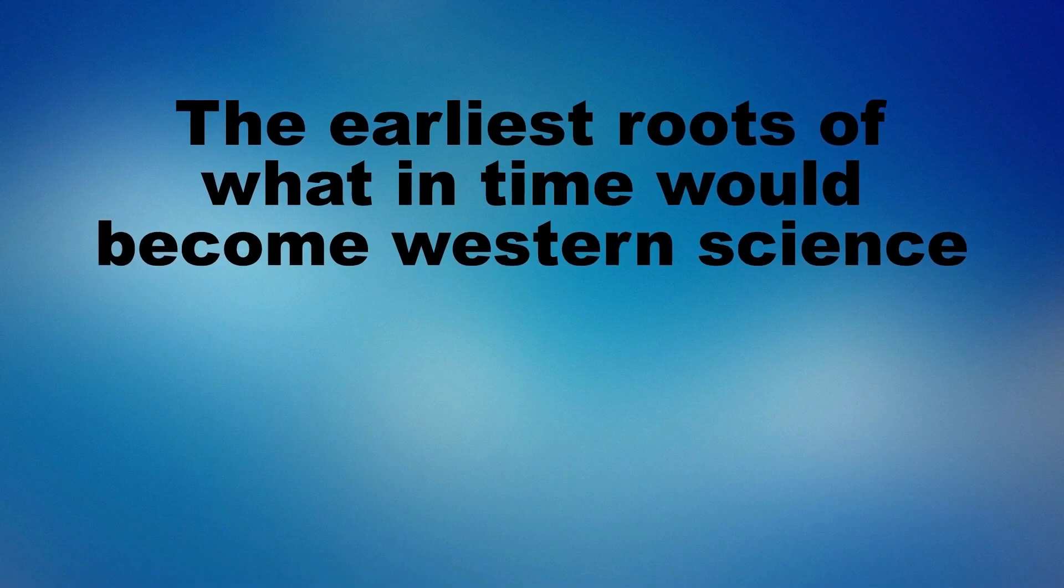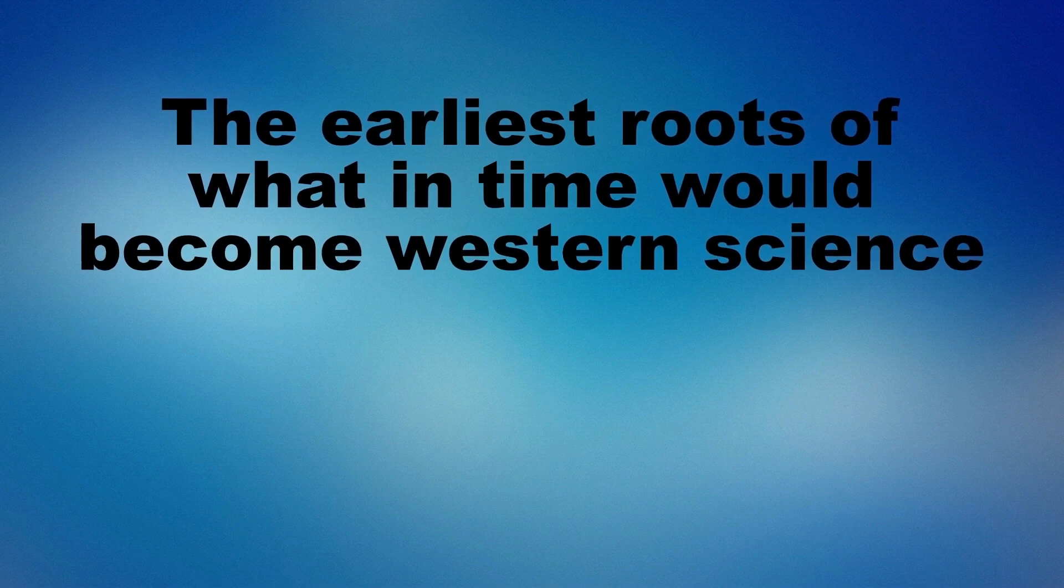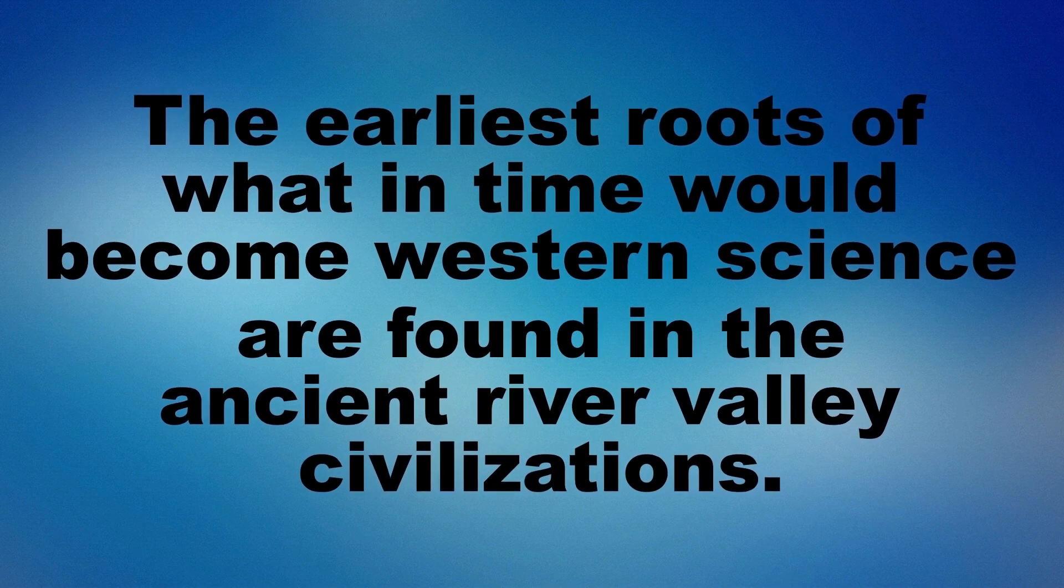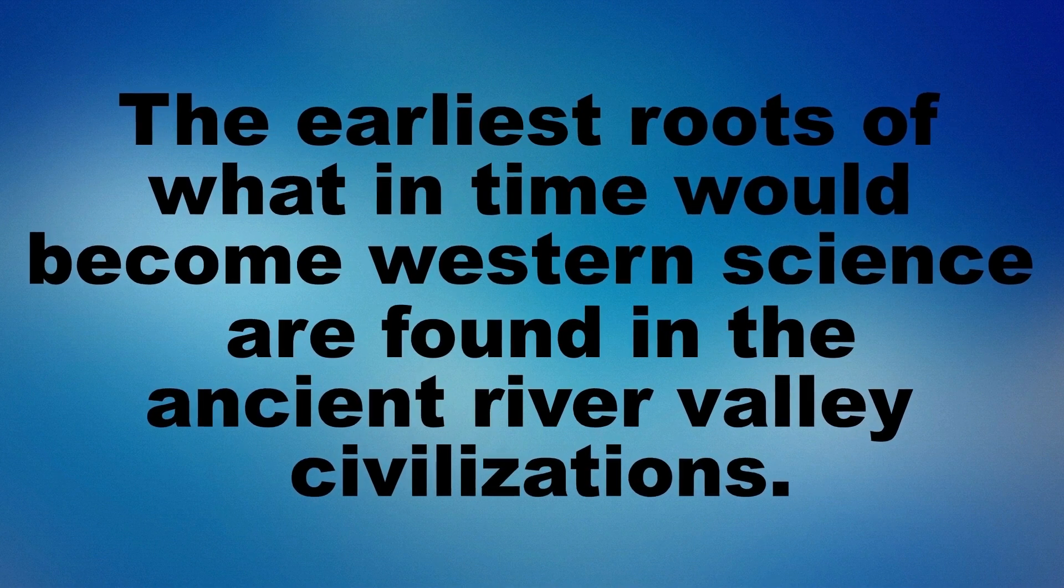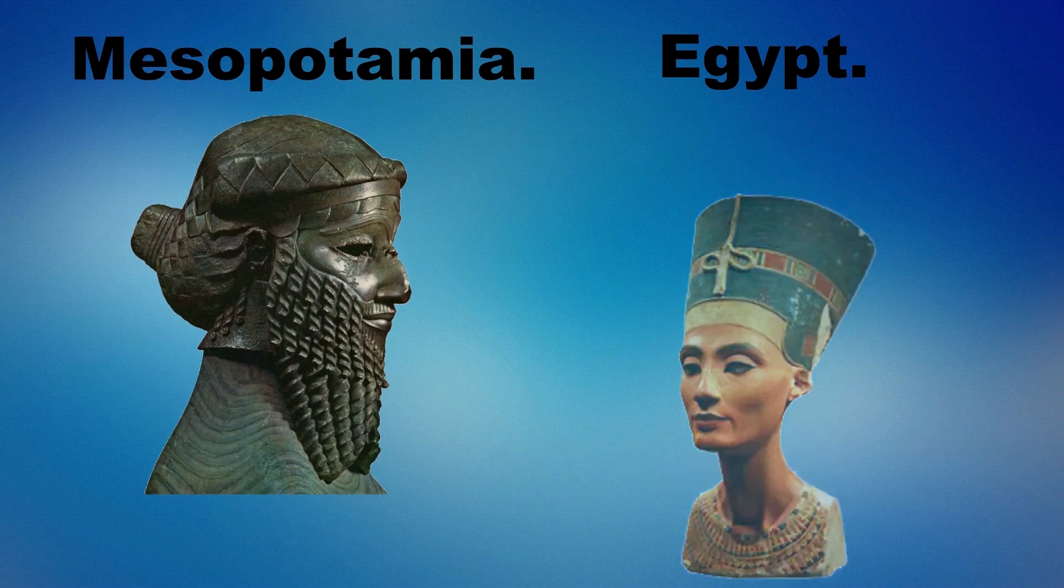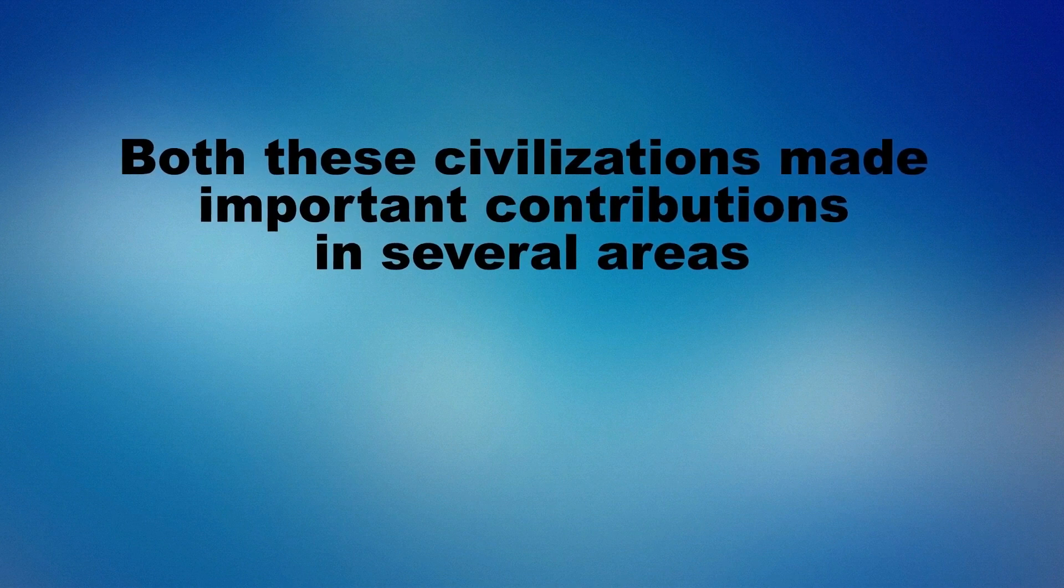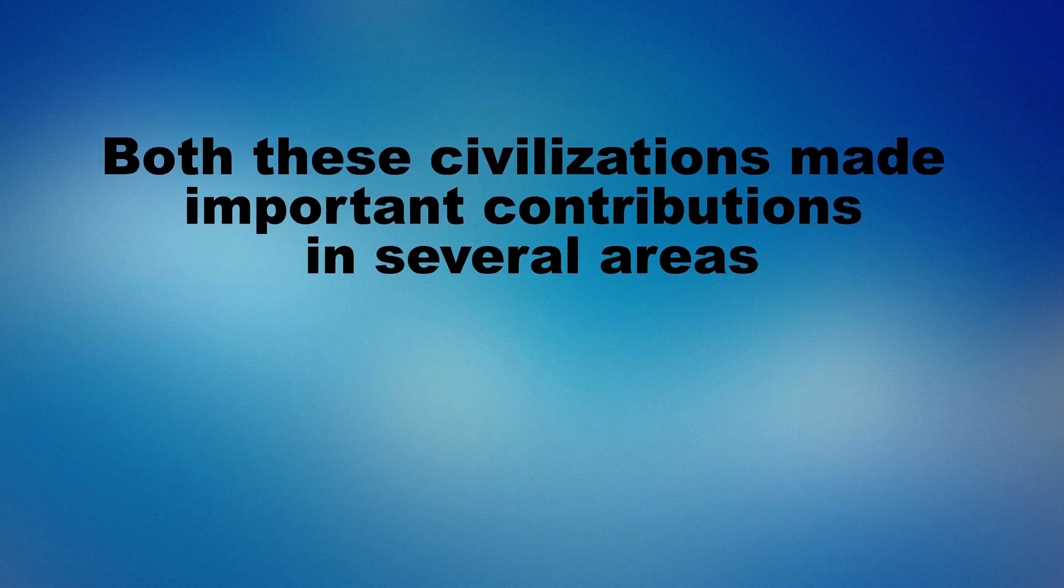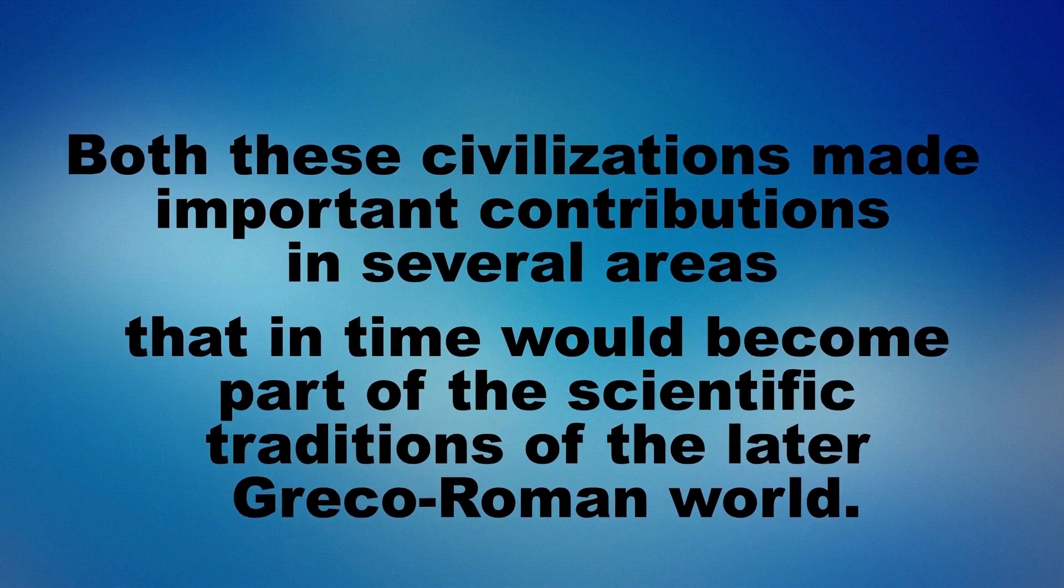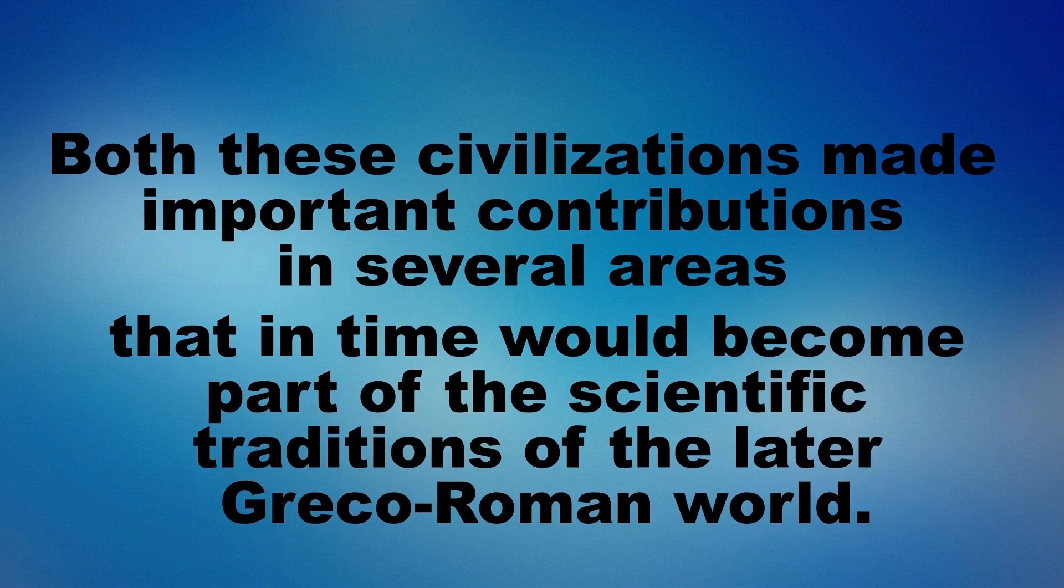The earliest roots of what in time would become western science are found in the ancient river valley civilizations. In accordance with the referenced literature, and to avoid confusion, we will restrict ourselves to the contributions done by ancient Egypt and Mesopotamia. Both these civilizations made important contributions in several areas that in time would become part of the scientific traditions of the later Greco-Roman world.